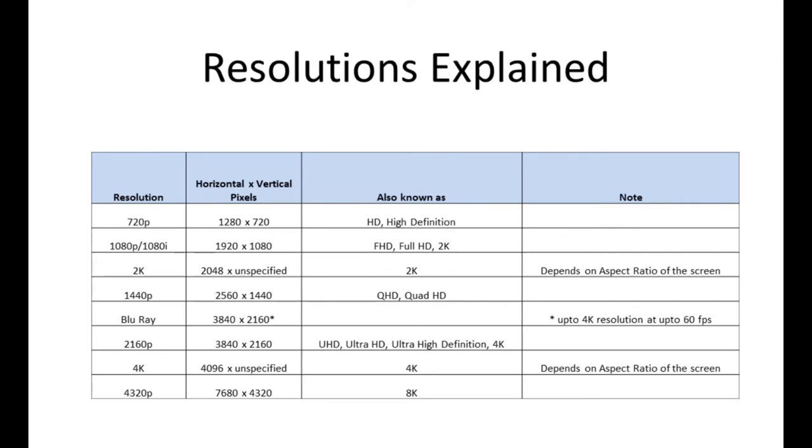Now we will look at the comparison of the resolutions. So in this table I've listed most of the resolutions starting with 720p. 720p means 720 pixels vertically. So this is a standard of resolution that whenever someone is talking about the resolution, he's actually talking about the number of pixels vertically, he's not talking about the pixels horizontally.